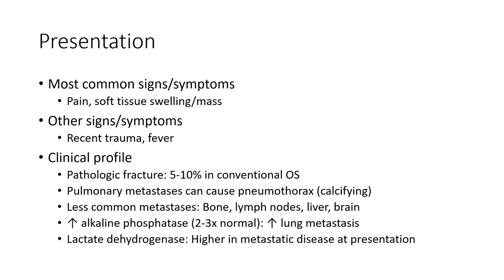Pulmonary metastasis can cause hemorrhagic presentations. Less common metastasis sites include bone, lymph node, liver, and brain.